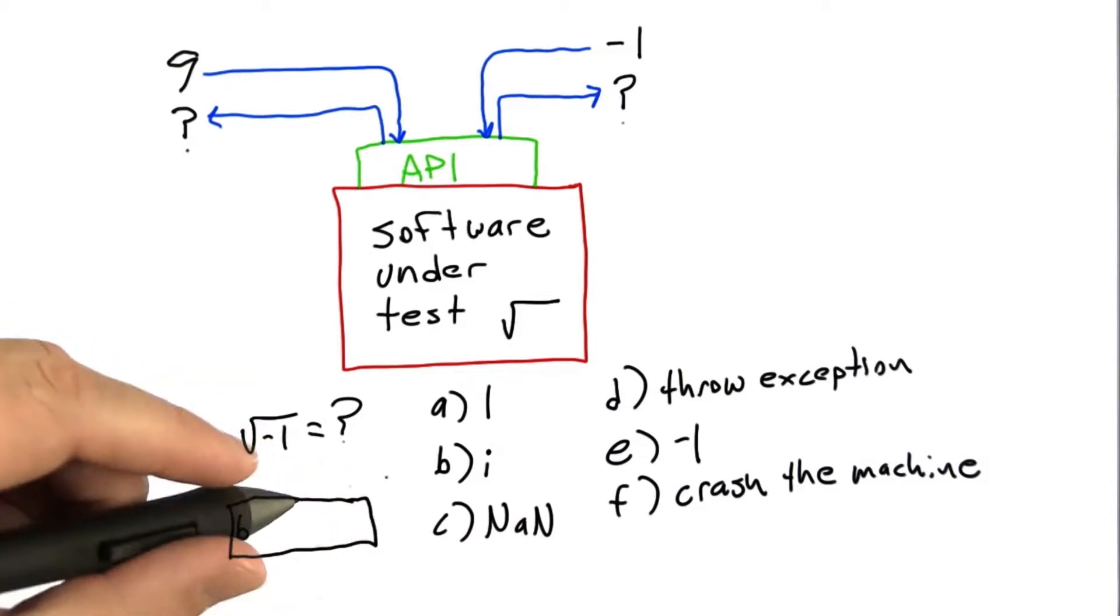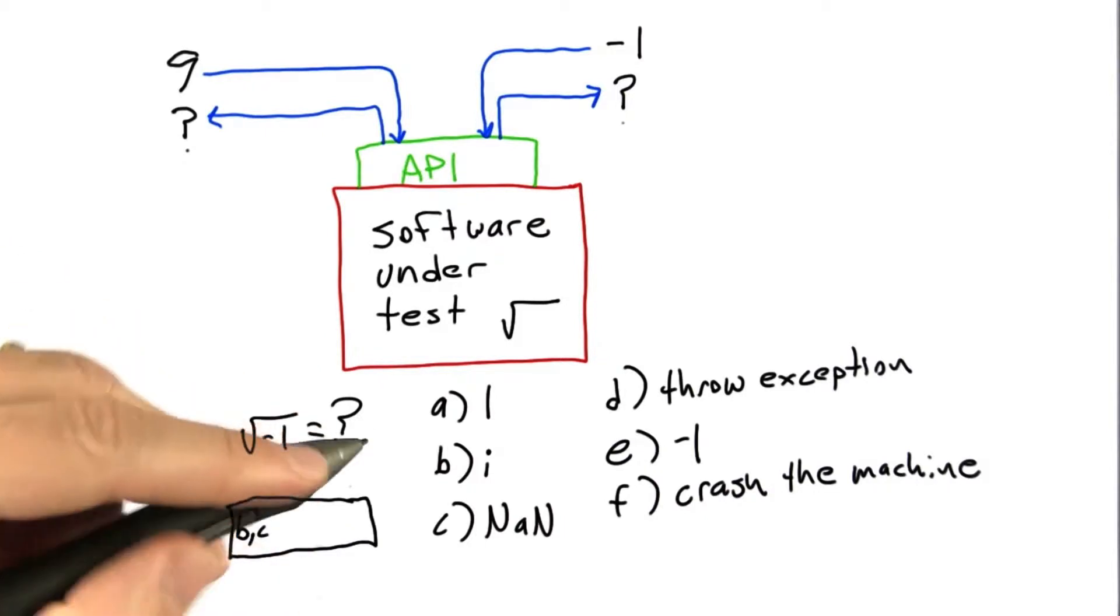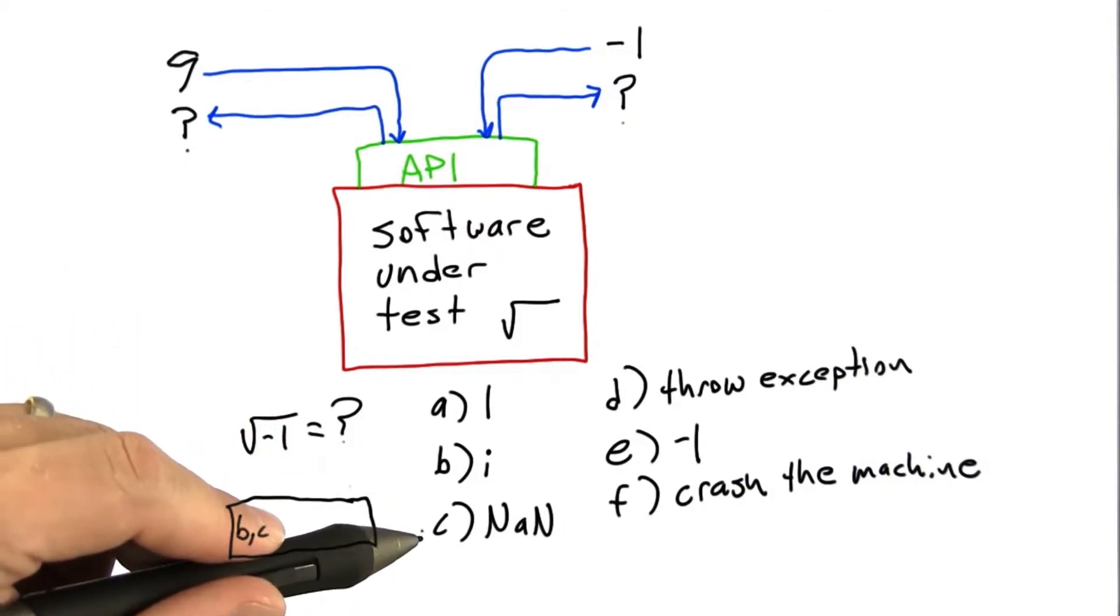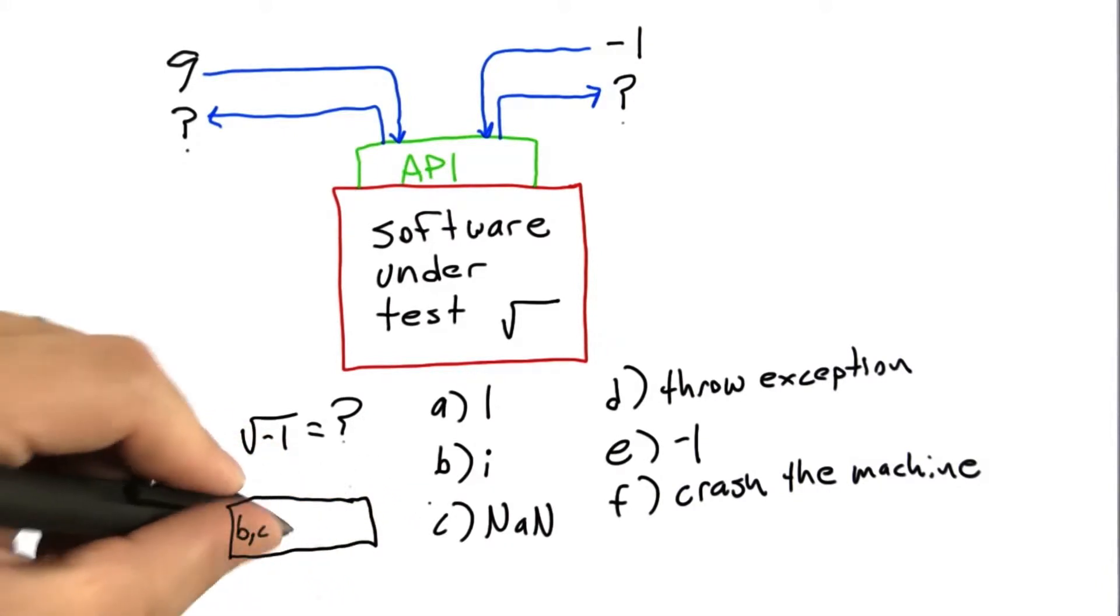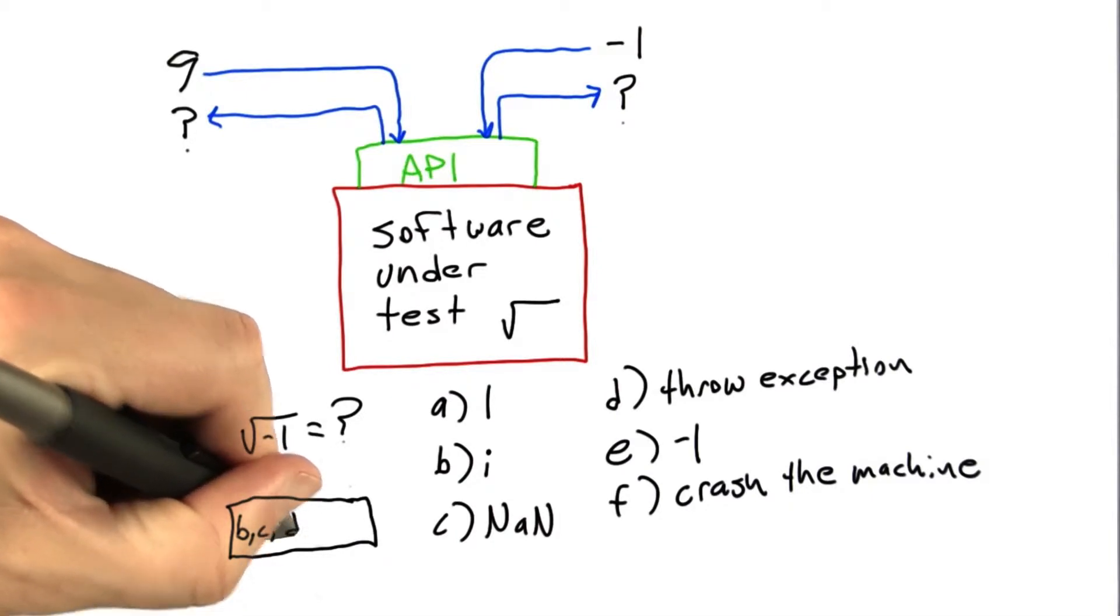C is probably an acceptable result as well. Not a number is often returned for numerical queries in the floating point domain that have no good actual answer. D is also most likely a good answer, throwing an exception.